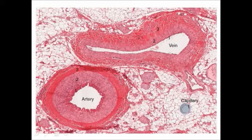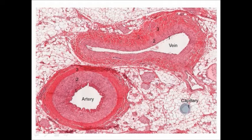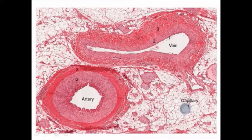Finally, bottom right, the capillary has only one layer — the endothelial layer, the tunica interna. Capillaries are just a single layer of squamous epithelial cells held together with basement membrane. Later in the unit we'll discuss the role of capillaries in the exchange of materials between the blood and the tissues and cells it flows past.